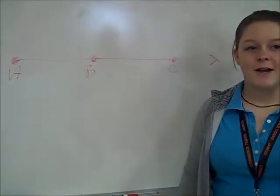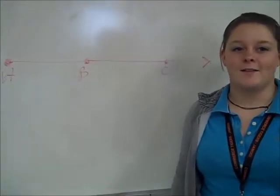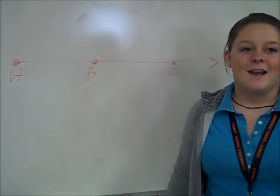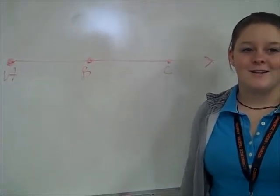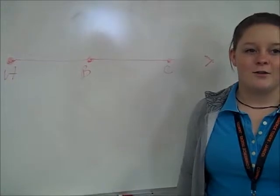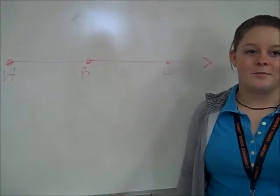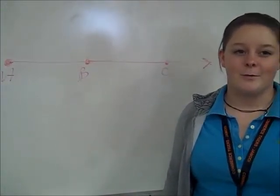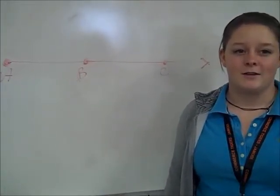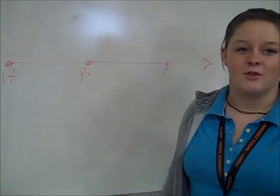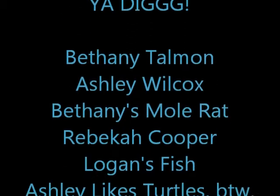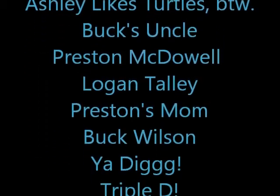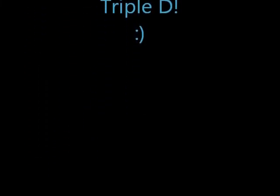I'm doing a ray. A ray has one end point and extends infinity in the opposite direction. Rays are identified with arrows on top of the letters showing both the end point and the direction in which the rays are going. They're all going that way.